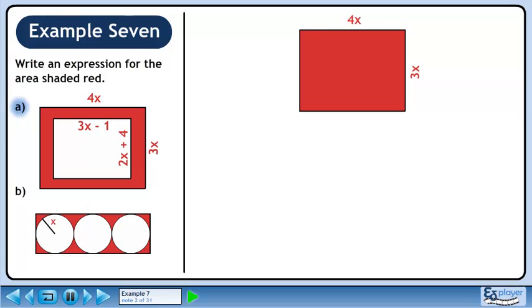The shape in Part A is the red rectangle with the middle cut out. Let's start this example by finding the area of the whole red rectangle.